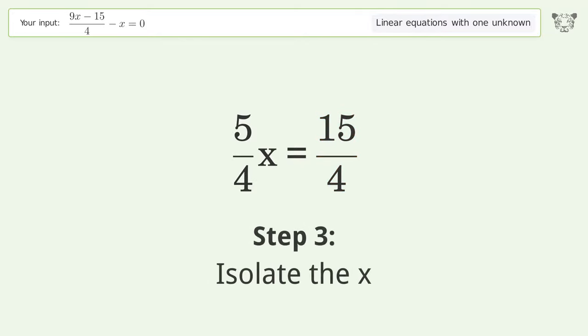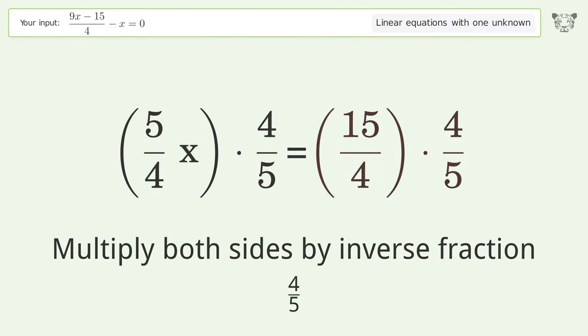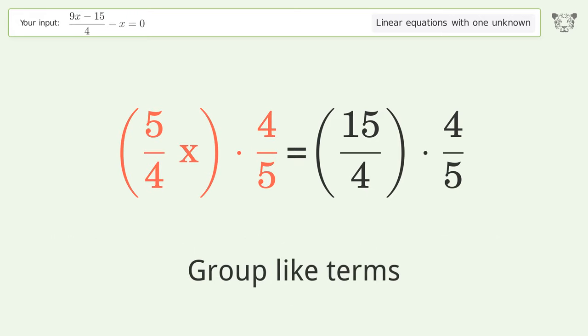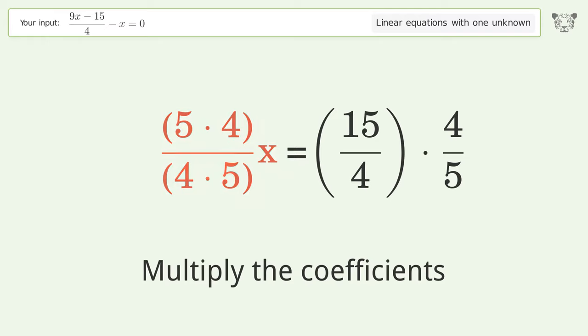Isolate the x. Multiply both sides by inverse fraction 4 over 5. Group like terms. Multiply the coefficients. Simplify the fraction.